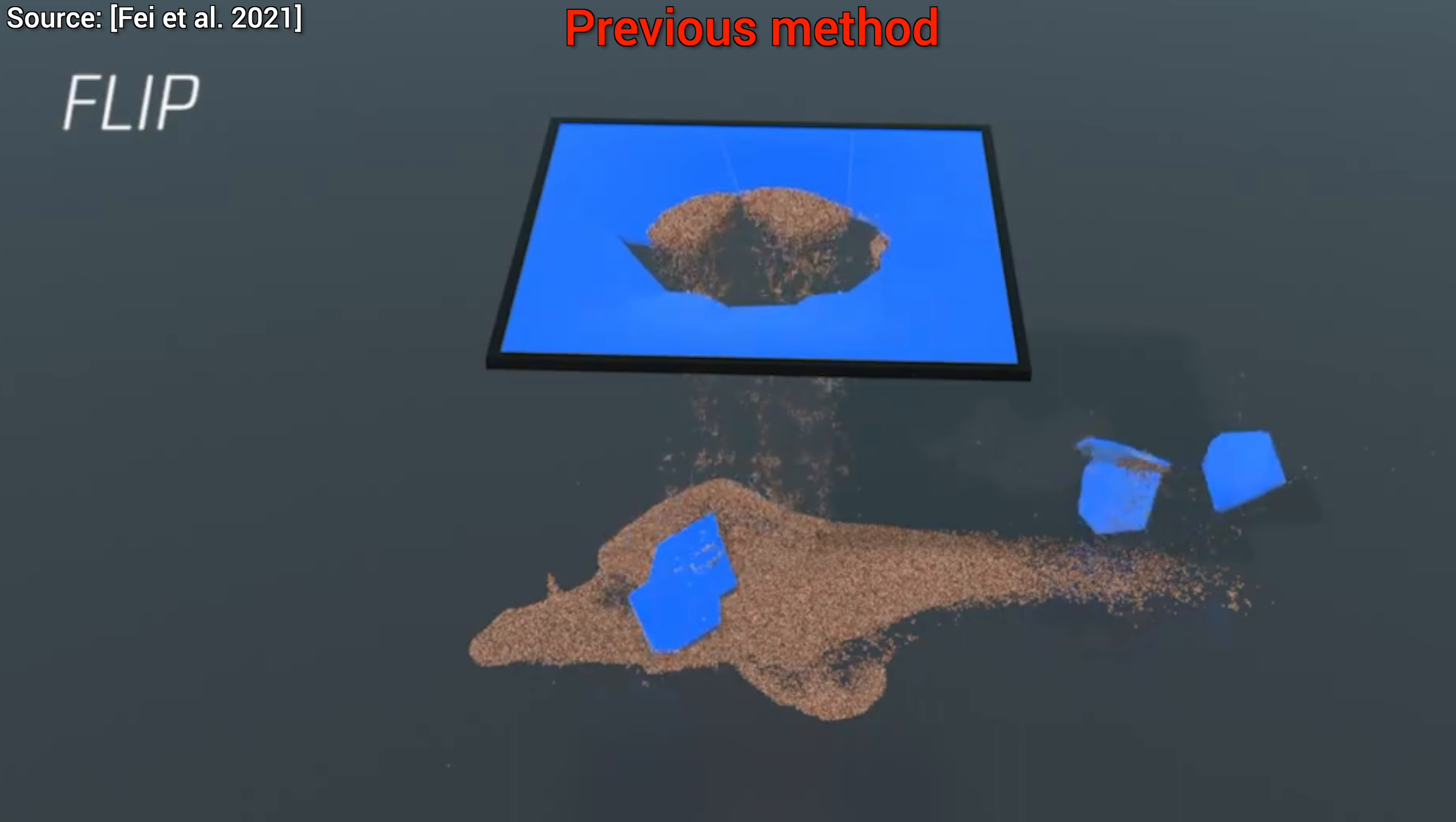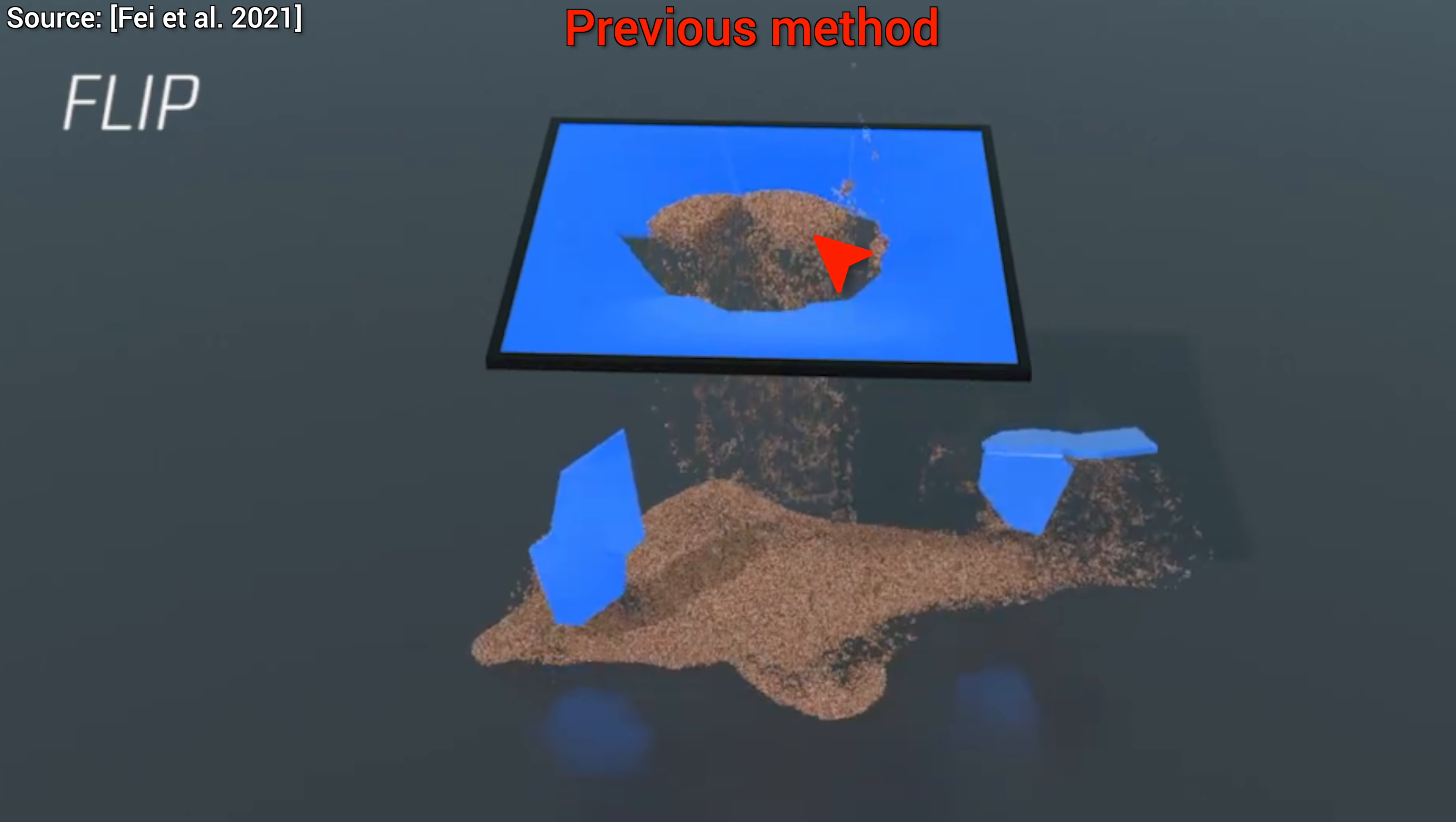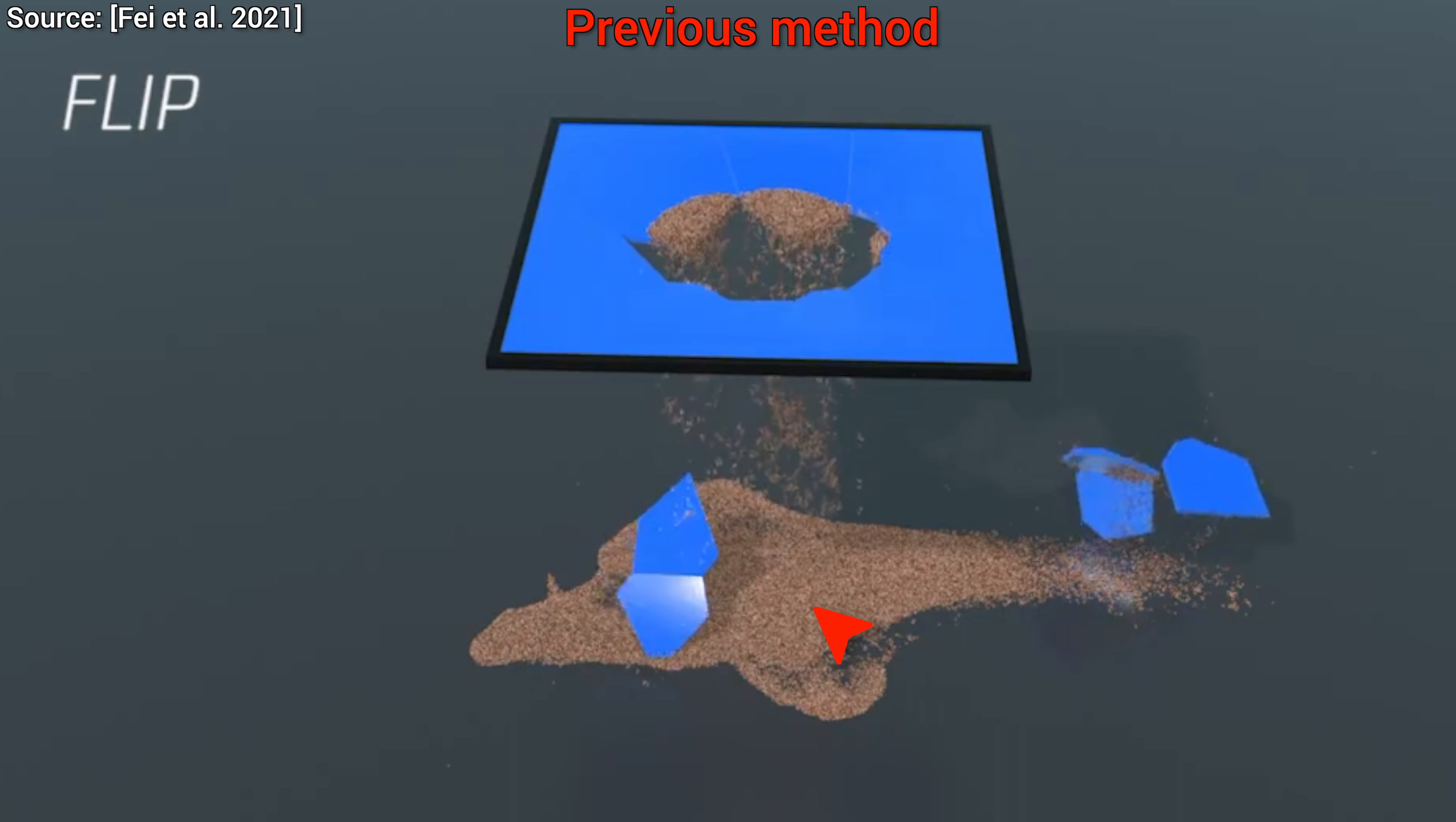For instance, when simulating this non-frictional elastic plate with previous methods, some of the particles get glued to it. And did you catch the other issue? Yes, the rest of the particles also refuse to slide off each other.